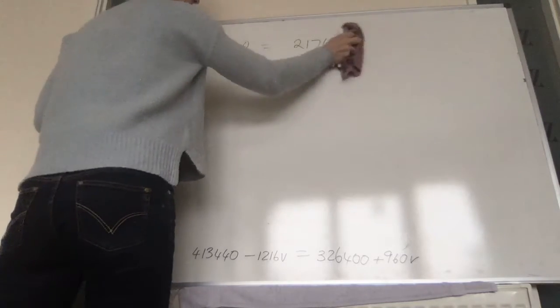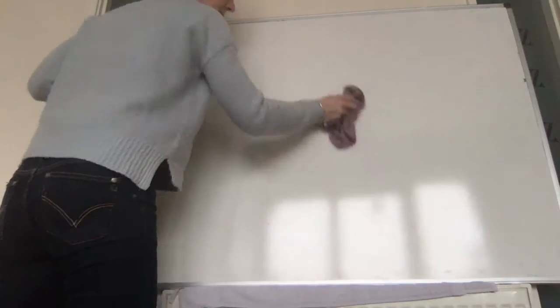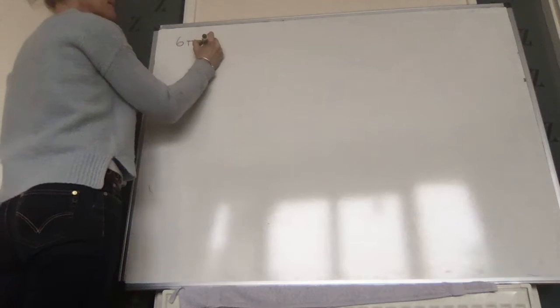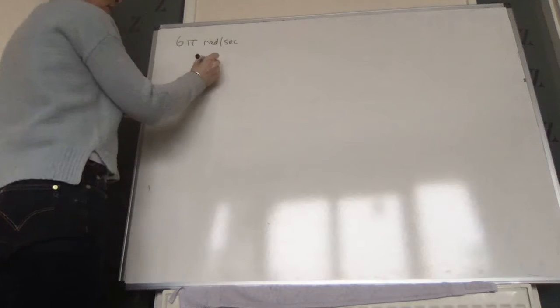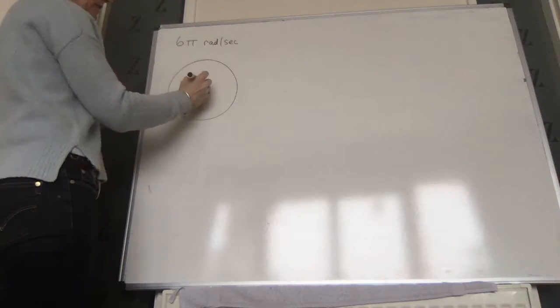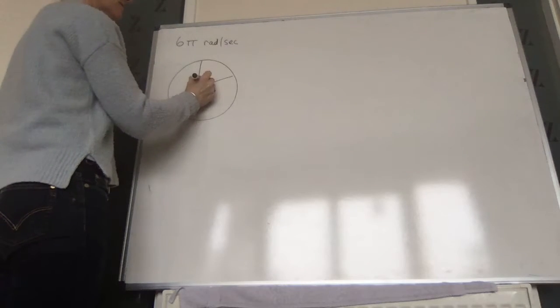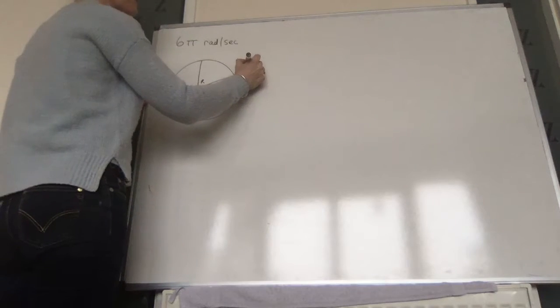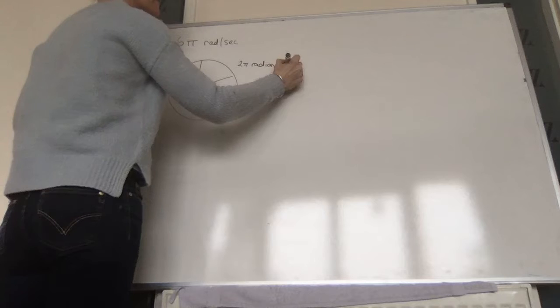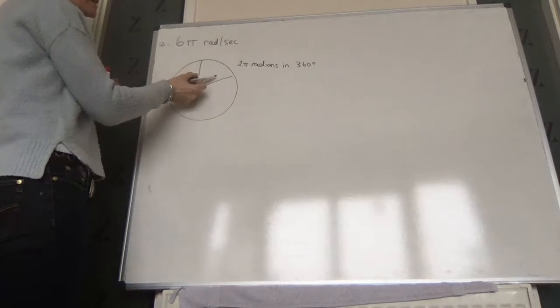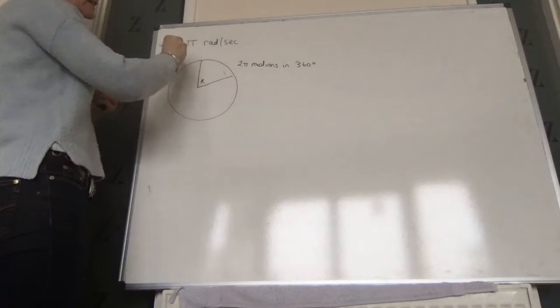The last question: a whistle emitting a note of 2 kilohertz is whirled on a horizontal circle at an angular velocity of 6π radians per second. There are 2π radians in 360 degrees, so the whistle sweeps out 6π radians every second.